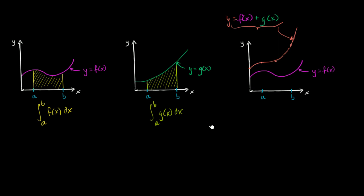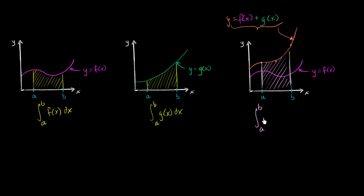Now, an interesting question is: what would be the area under this curve? We know how to represent the area under f of x plus g of x above the positive x-axis between x equals a and x equals b. We can represent that as the definite integral from a to b of f of x plus g of x dx. The question is, how does this area relate to the other two areas?